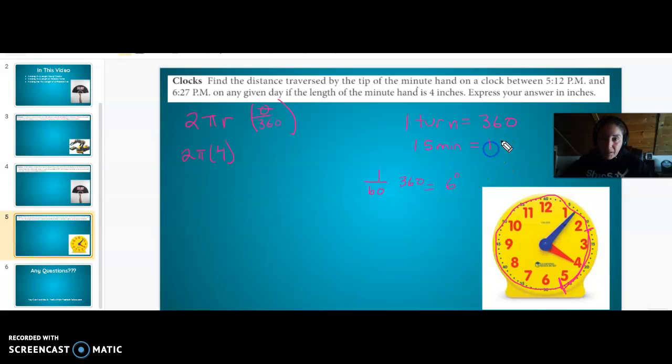So 15 minutes then is 15 times 6. So we go one turn plus 15 minutes. So we're going to add these together. We're still trying to figure out, how many degrees did we go? 360 plus 15 times 6. This is going to be 450 degrees. So our θ is 450.